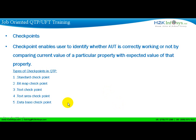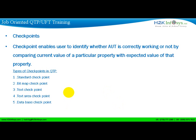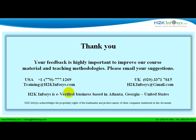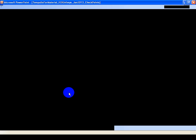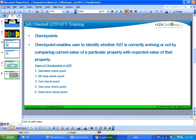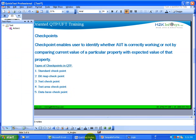There are different types of checkpoints: standard checkpoint, bitmap checkpoint, text checkpoint, text area, database, XML, table, image, page, and accessibility. Depending on what kind of verification you do, you use different checkpoints. In today's session we are going to look at standard and bitmap checkpoints, and in later video presentations we will talk about XML and accessibility checkpoints.